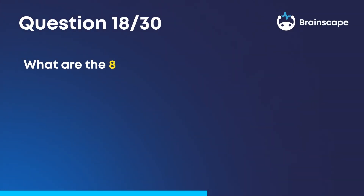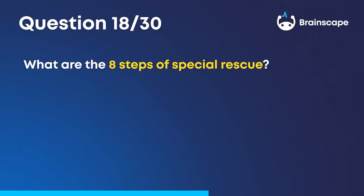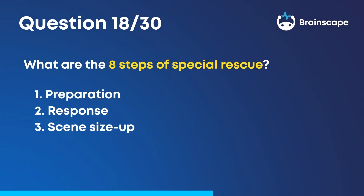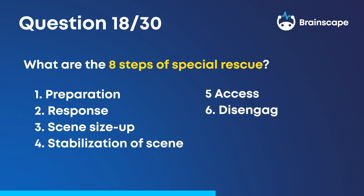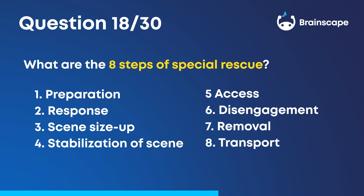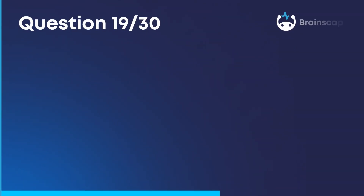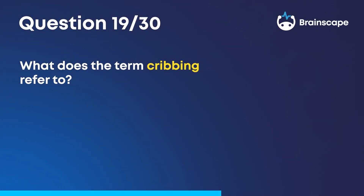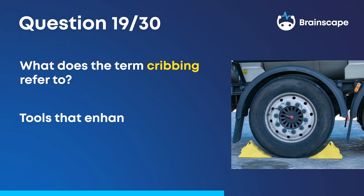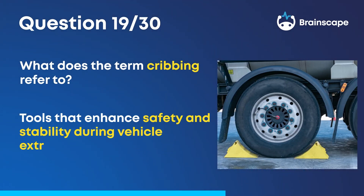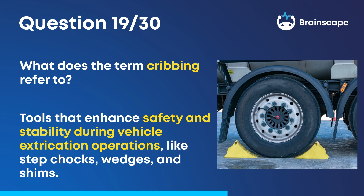Question 18. What are the eight steps of a special rescue? (Answer not provided in this segment.) Question 19. What does the term cribbing refer to? Tools that enhance safety and stability during vehicle extrication operations, like step chocks, wedges, and shims.